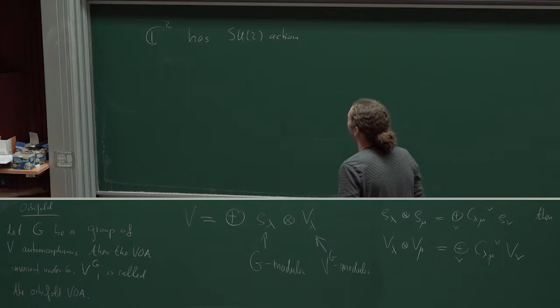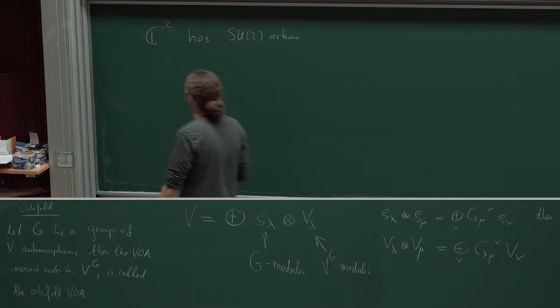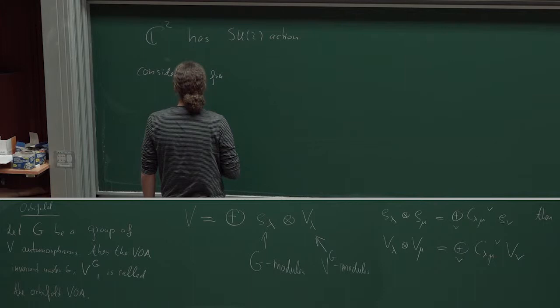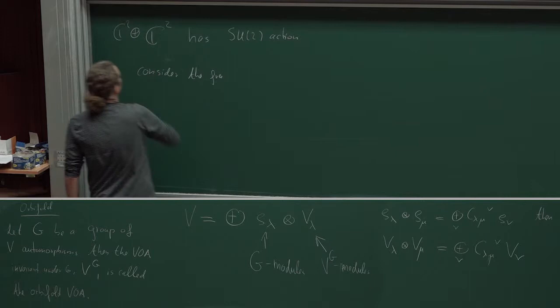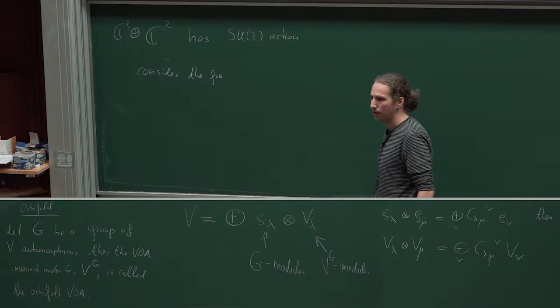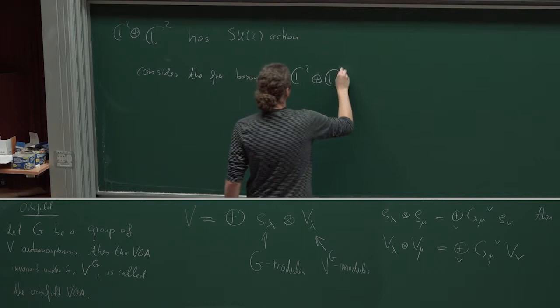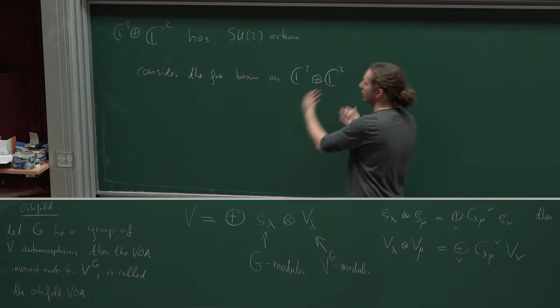So that means I can now take my favorite free-field algebra associated to C². I prefer to take C² plus C² — two copies of the standard representation — because I want to have a non-degenerate invariant pairing. Consider the free boson on two copies of the standard representation of SL(2), with a bilinear form, just the pairing.